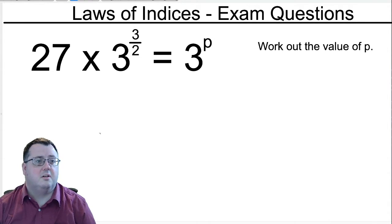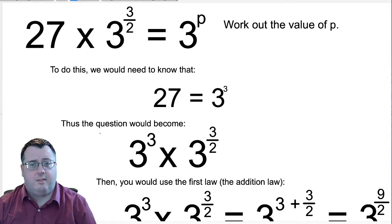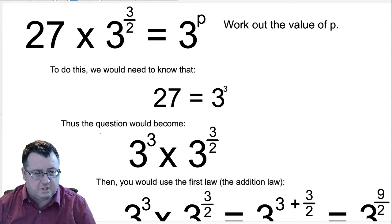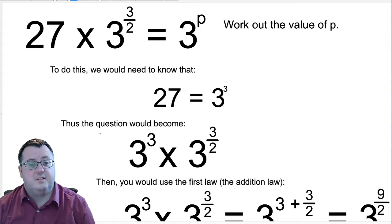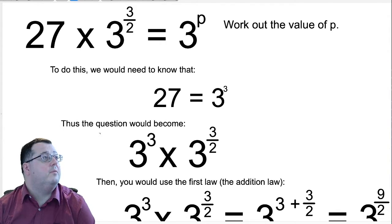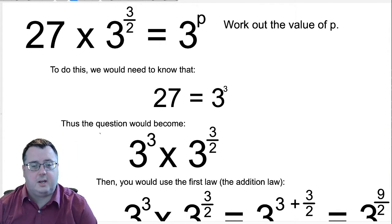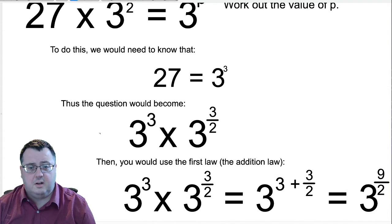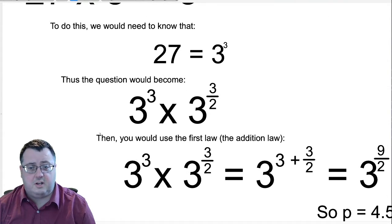Okay, let's go through it. So to work out the value of p, we first need to get everything in terms of the base power, which is 3. We should know that 27 is 3 to the power of 3. So the question would then become 3 to the power 3 times 3 to the 3 over 2. Then you would use the first law, the addition law, because you're multiplying the bases of 3 together, and thus adding the index.